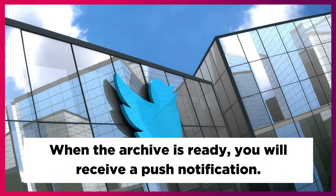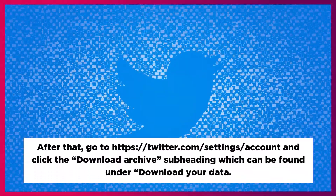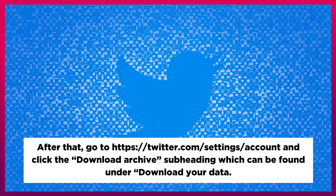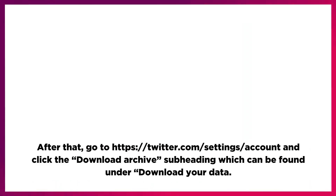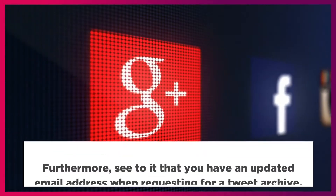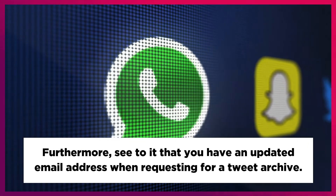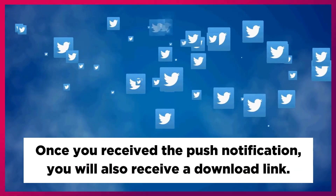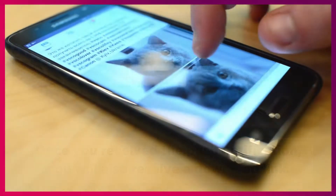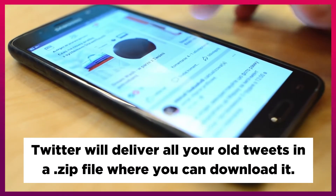When the archive is ready, you will receive a push notification. After that, go to https://twitter.com/settings/account and click the Download Archive subheading, which can be found under Download Your Data. Furthermore, see to it that you have an updated email address when requesting a tweet archive. Once you receive the push notification, you will also receive a download link. Twitter will deliver all your old tweets in a .zip file which you can download.